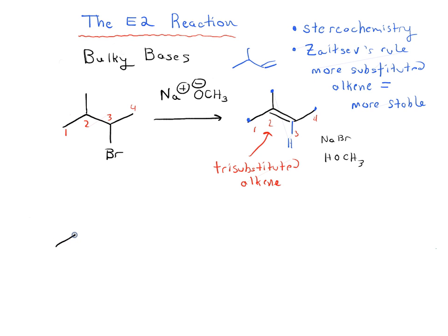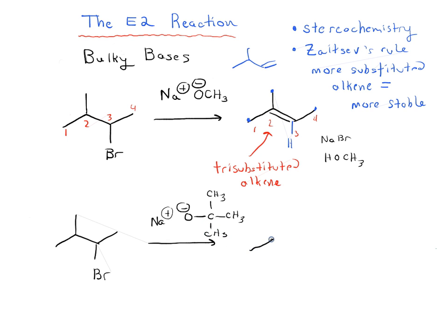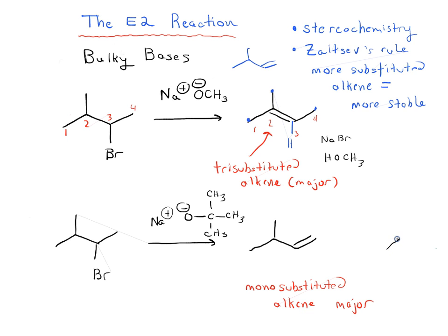There are cases where if we choose a slightly different base — O minus C(CH3)3, t-butoxide — we can get a different product from our elimination reaction. So instead of getting the tri-substituted alkene as our major product, we get the monosubstituted alkene as our major product, and we might get some of the tri-substituted alkene as a minor product.